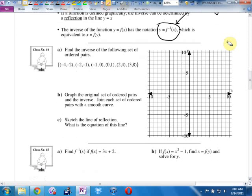Example 4 says, find the inverse of the following set of ordered pairs. How do I find an inverse? Instead of negative 4, negative 2, it's going to be negative 2, negative 4. That's the inverse of that first point. Make sure you don't change positive and negative. It's just literally switch the numbers around. Negative 2, negative 1 is going to be negative 1, negative 2.